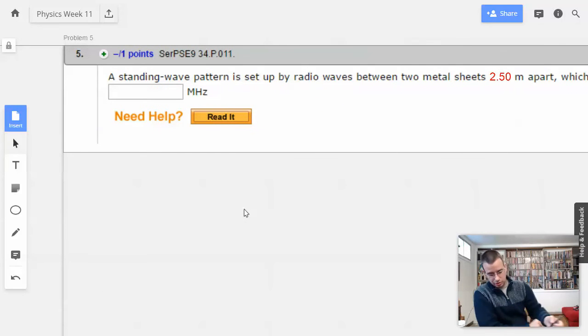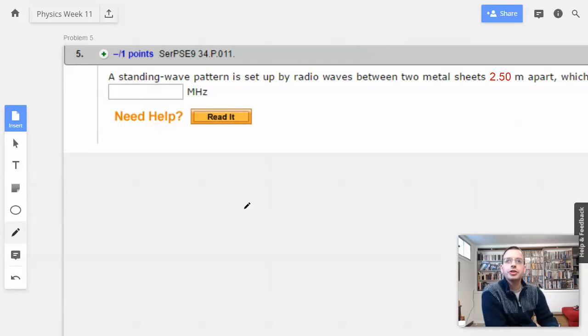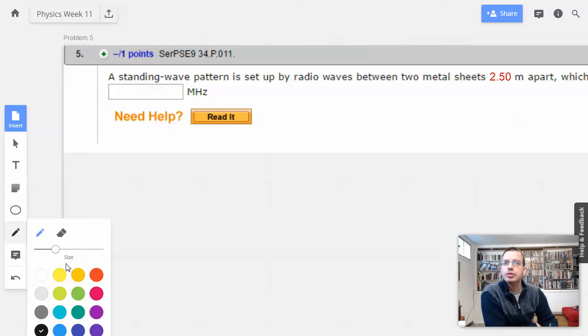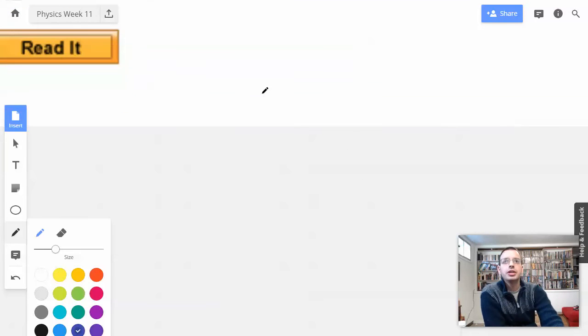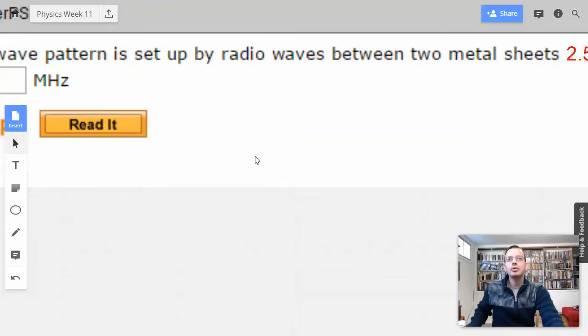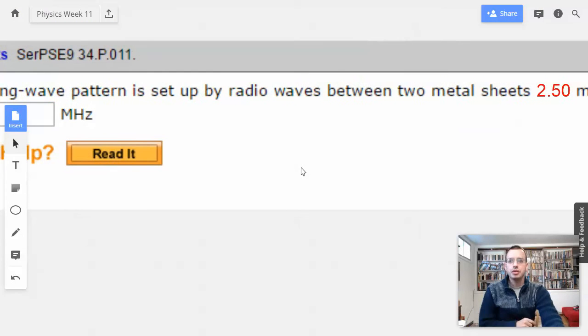All right, first, draw a picture. So we get our picture going. Let's use blue. I haven't used blue for a while, right? I'll zoom in a little bit more. Appropriate amount of zooming. All right, so we got one metal sheet, other metal sheet,